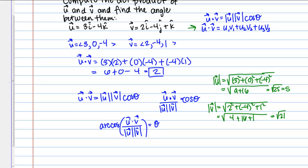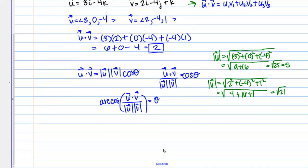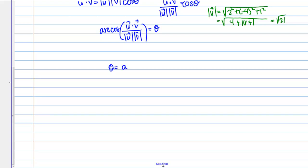So now we can plug in all those values and actually compute theta. So theta equals the arc cosine of u dot v, which is 2, over mag u, magnitude of u, which is 5 we said, times the magnitude of v, which is the square root of 21. And then we just need to compute what this actually is. So I'm going to put that in the calculator for us and see what we do.